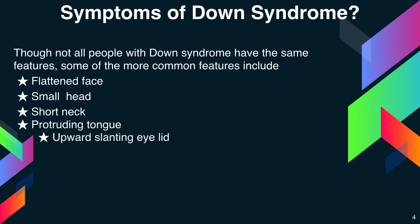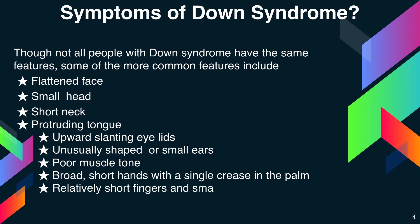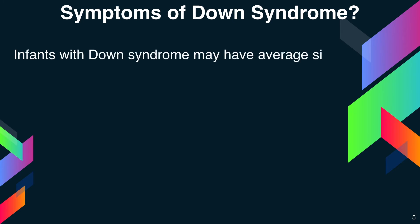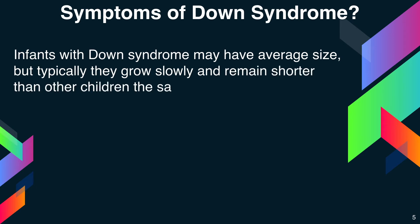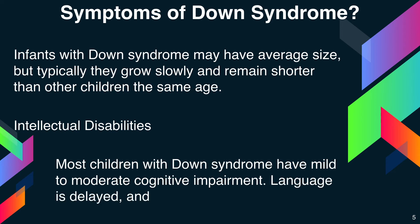Additional common features include upward slanting eyelids, unusually shaped or small ears, poor muscle tone, broad short hands with a single crease in the palm, relatively short fingers, small hands and feet, excessive flexibility, and short height. Infants with Down syndrome may have average size but typically grow slowly and remain shorter than other children of the same age. Most children with Down syndrome have mild to moderate cognitive impairment. Language is delayed and both short and long-term memory is affected.